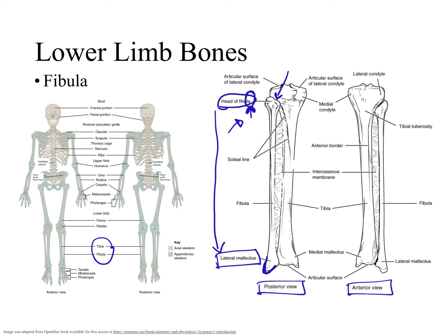If we look medially to the lateral malleolus, we see a point of the fibula bone that is touching the tibia bone, because the tibia is medial to the fibula. So we now have two points at which the tibia and the fibula bones are joining.